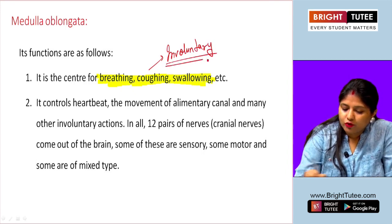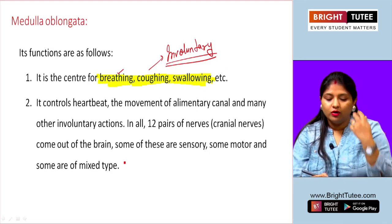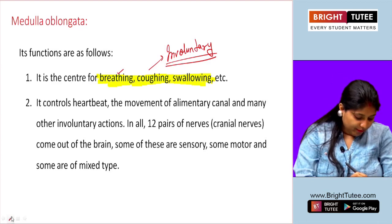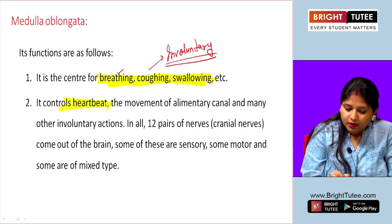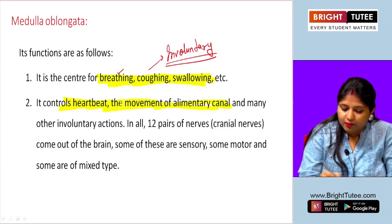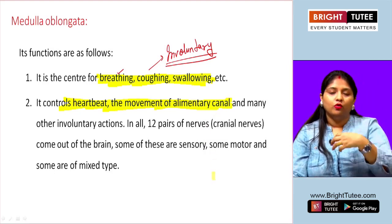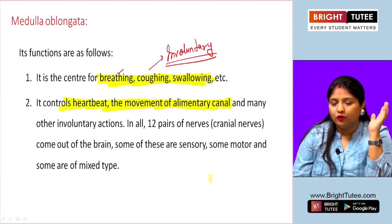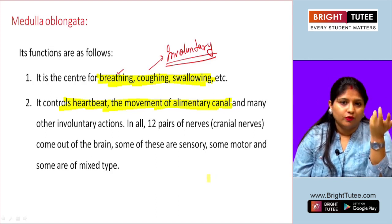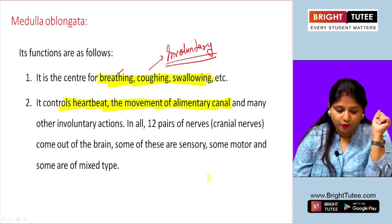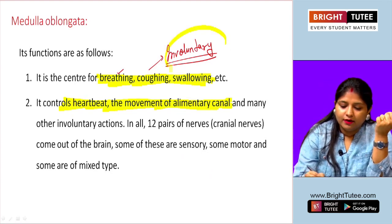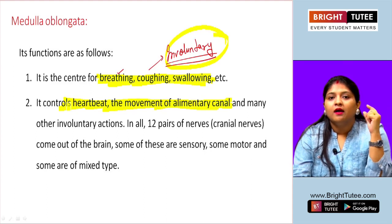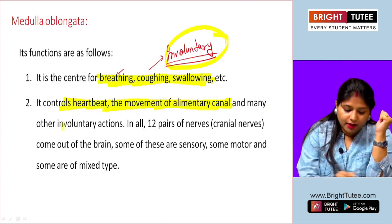Breathing, coughing, swallowing — none of these are under voluntary control, and they are all controlled by the medulla oblongata. It also controls heartbeat and the movement of the alimentary canal. While chewing is voluntary, once you swallow, everything is under the control of the medulla oblongata. Heartbeat is another involuntary function controlled here, along with many other involuntary functions.